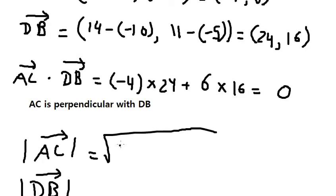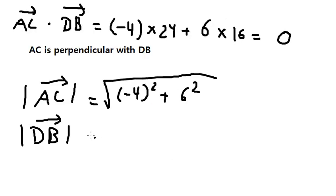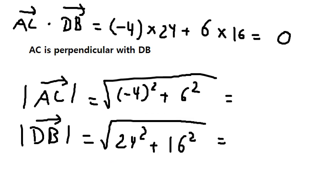So we have the square root of negative 4 squared plus 6 squared, and the second one we have the square root of 24 squared plus 16 squared. This gives us 2 times the square root of 13 and 8 times the square root of 13.